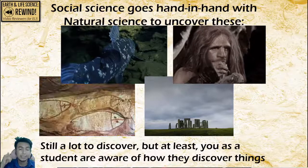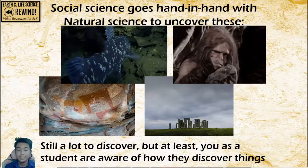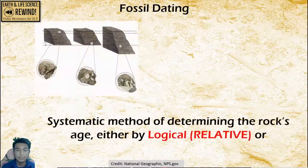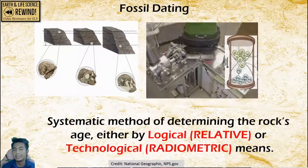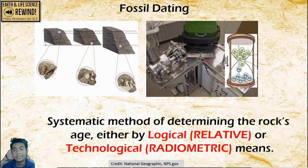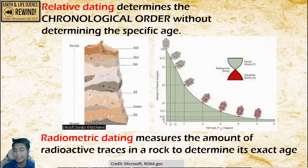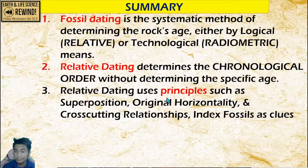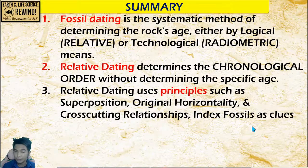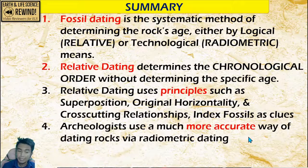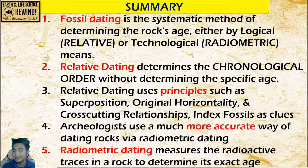Fossil dating and radiometric dating are not actually rocket science and can be explained in simple terms. Let us summarize: Fossil dating is the systematic method of determining the rock's age either by relative or radiometric dating. Relative dating determines the chronological order of rocks without determining the absolute specific age. Radiometric dating measures the amount of radioactive traces to determine its exact age. Relative dating uses principles such as superposition, original horizontality, cross-cutting relationships, and index fossils as clues. Archaeologists use a much more accurate way of dating rocks via radiometric dating.